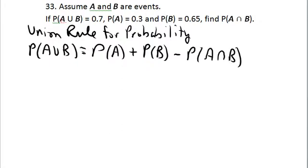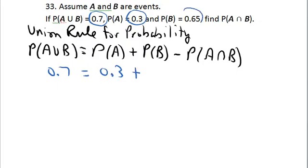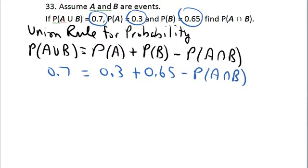They have given you three of those four values: the probability of A union B is 0.7, the probability of A is 0.3, and the probability of B is 0.65. Your task is to figure out the fourth term, which is the probability of A intersect B.